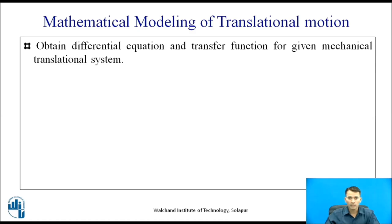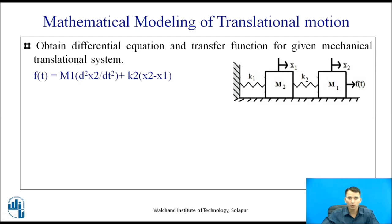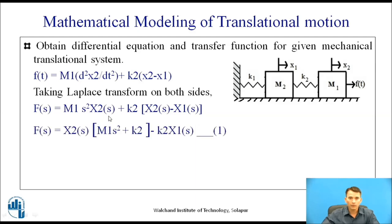Now, obtain the differential equation and transfer function for a given mechanical translation system with two masses. Applying Newton's law of motion to mass m₁, the equation becomes: f(t) = m₁·(d²x₂/dt²) + k₂·(x₂ − x₁), since the spring k₂ has displacements x₂ and x₁. Taking the Laplace transform on both sides: F(s) = m₁s²·X₂(s) + k₂·[X₂(s) − X₁(s)]. Taking X₂(s) common, we get equation 1.